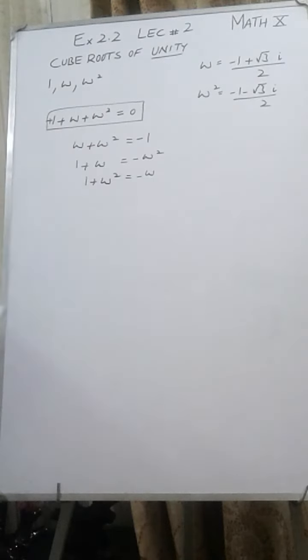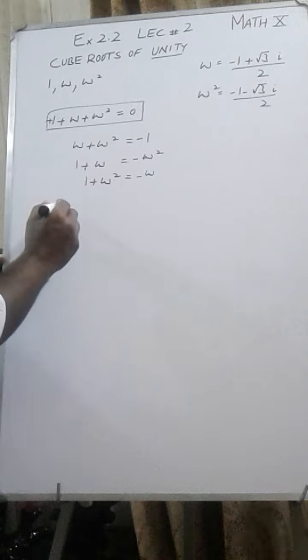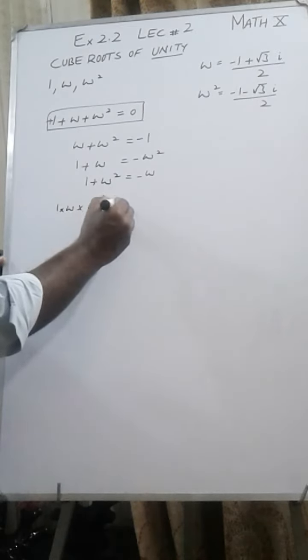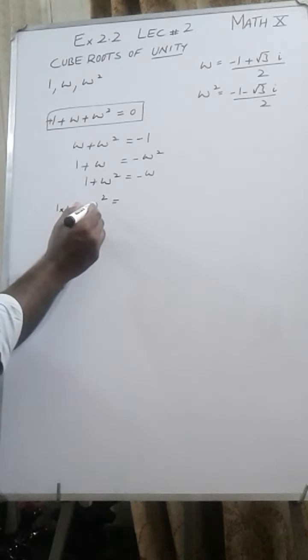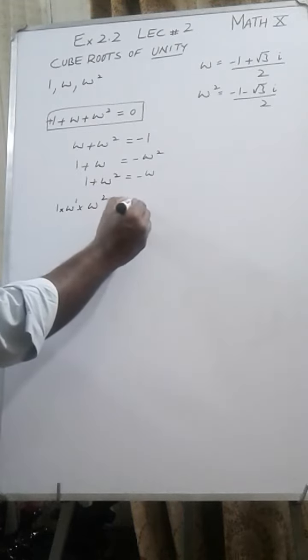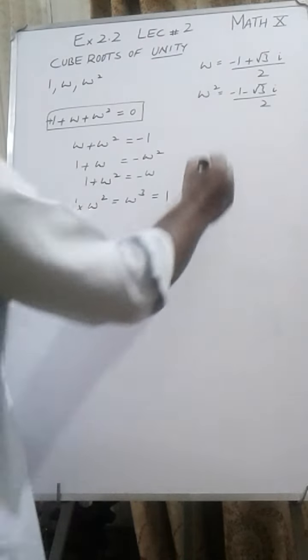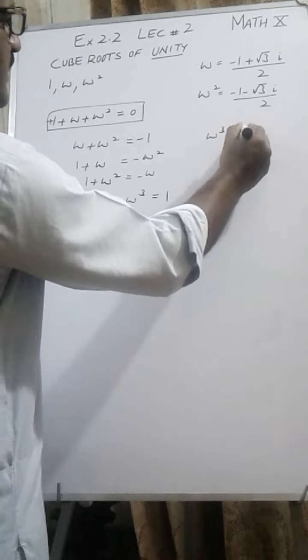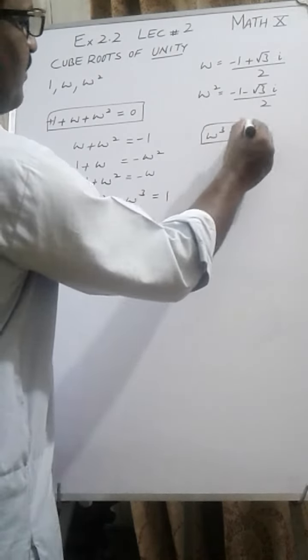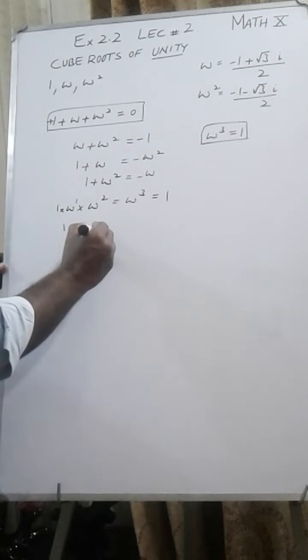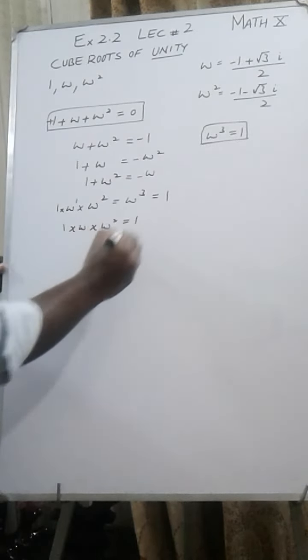Now look at the product: 1 × ω × ω². That overall omega square times omega power one will become ω³, and the overall answer is 1. So remember, ω³ is always equal to 1. That is a very important result we will be using in the exercise. And another thing: 1 × ω × ω² = 1.